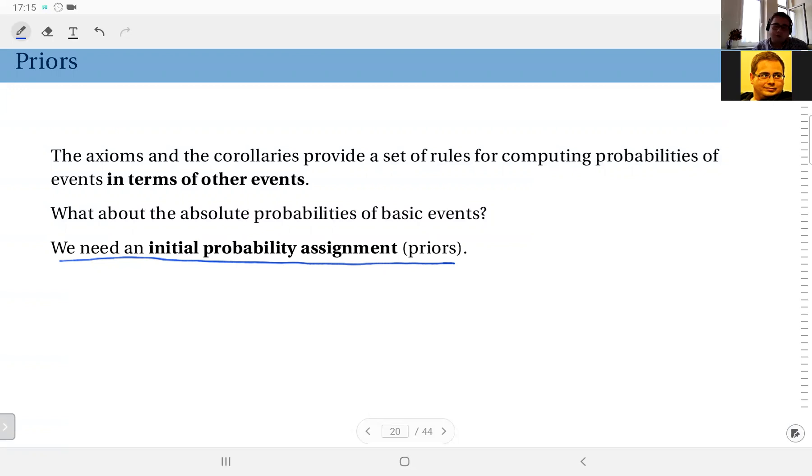This is based on your belief on the likelihood of each event. At this point, you are actually making an educated guess. For instance, what is the probability of the outcome three when you throw a die?